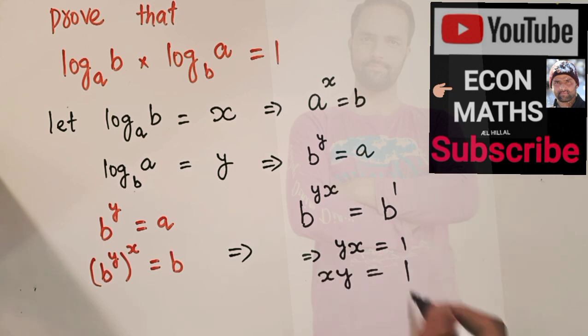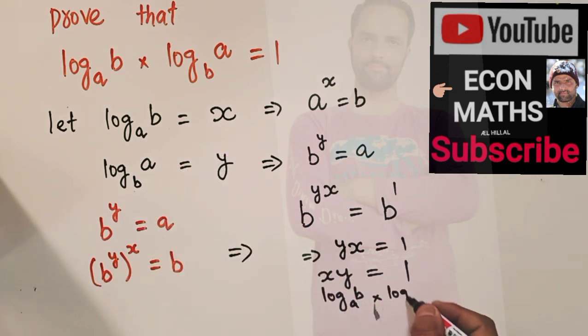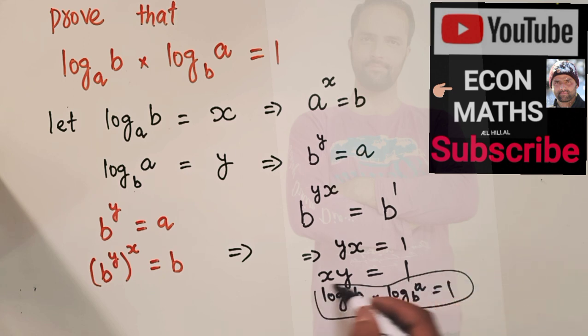X, Y is equal to 1. So, X is equal to log B with base A times Y is log A with base B is equal to 1. So, we have proved it here. I hope I make myself clear in this video. Thank you.